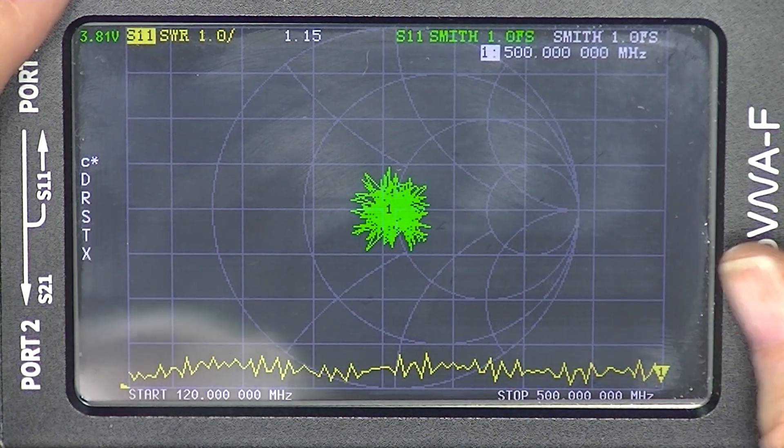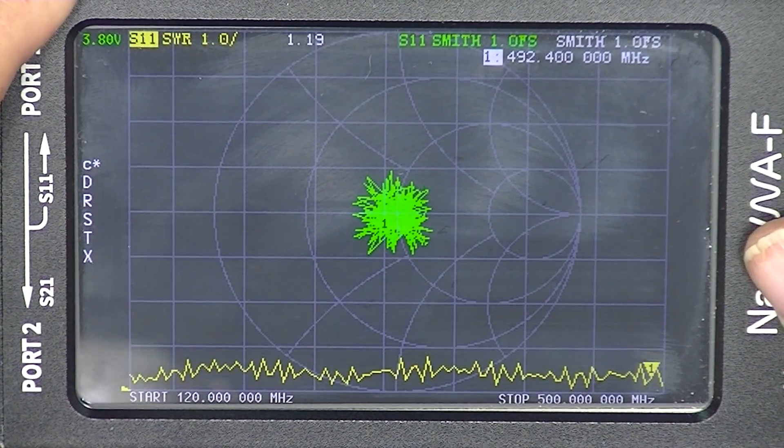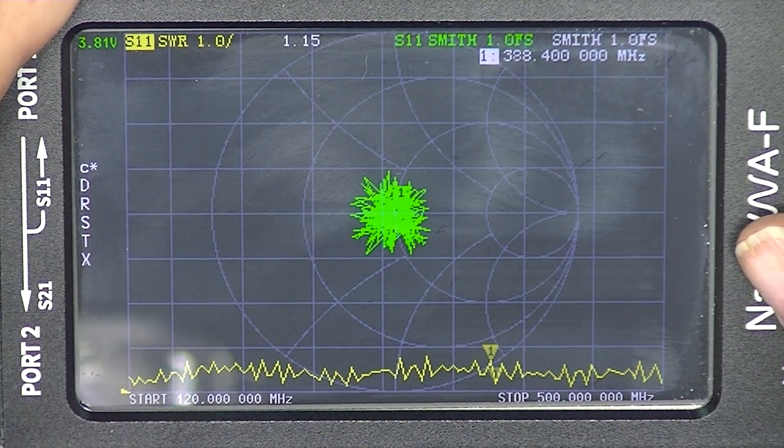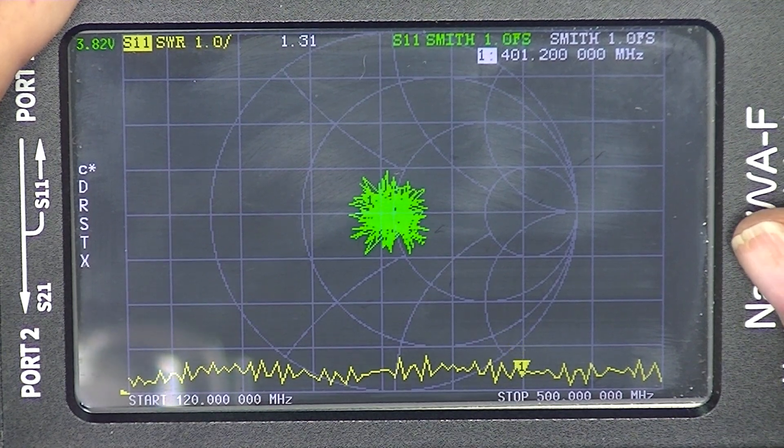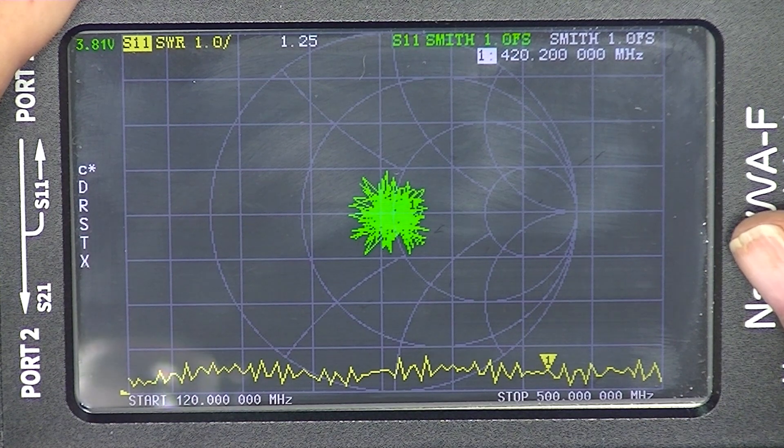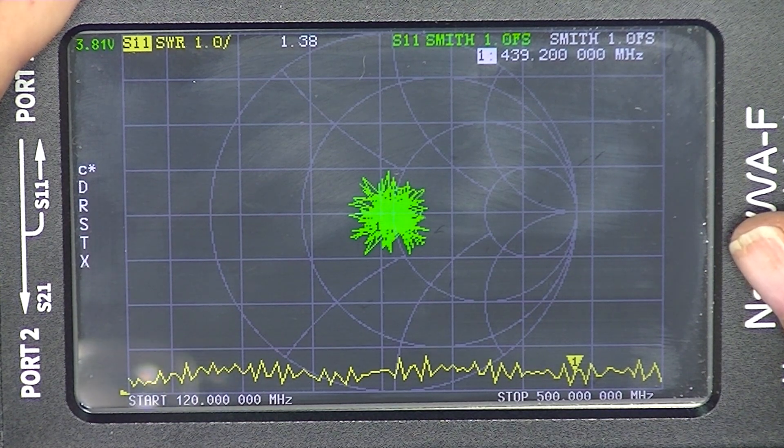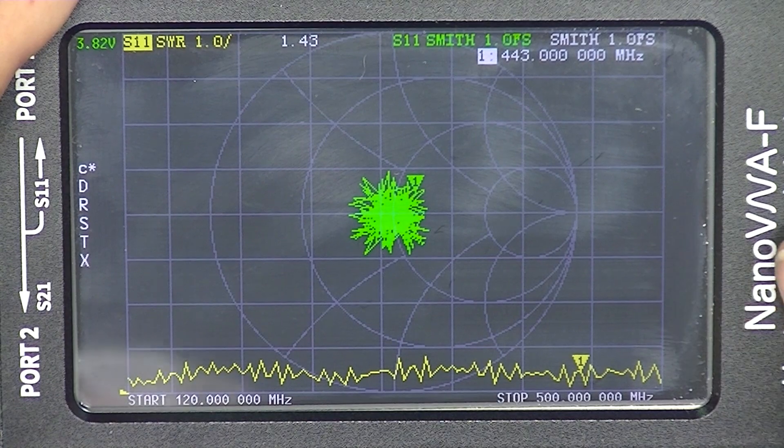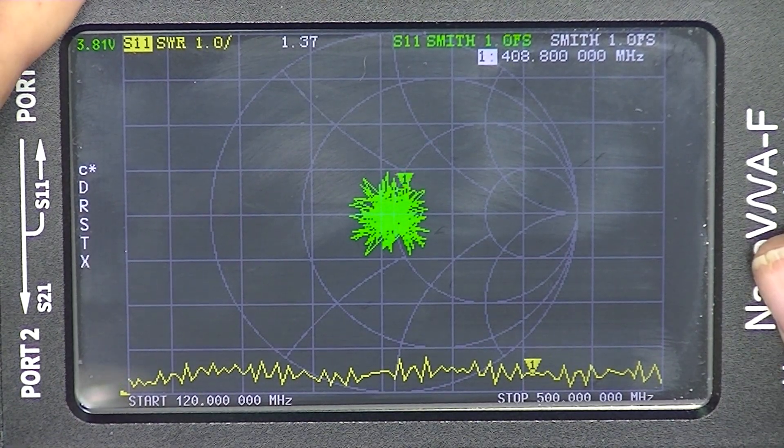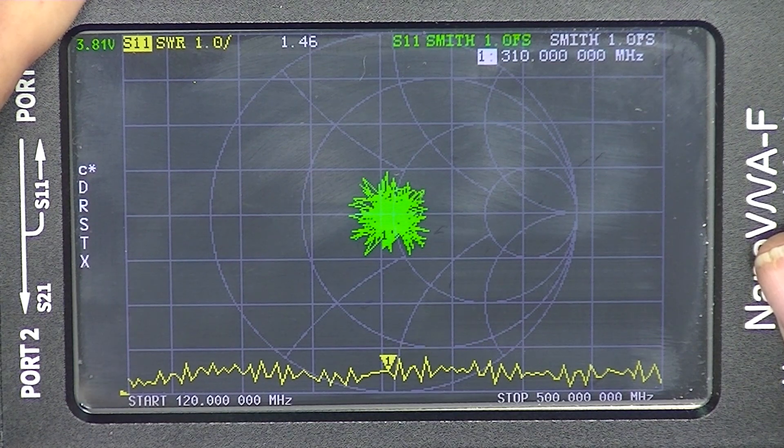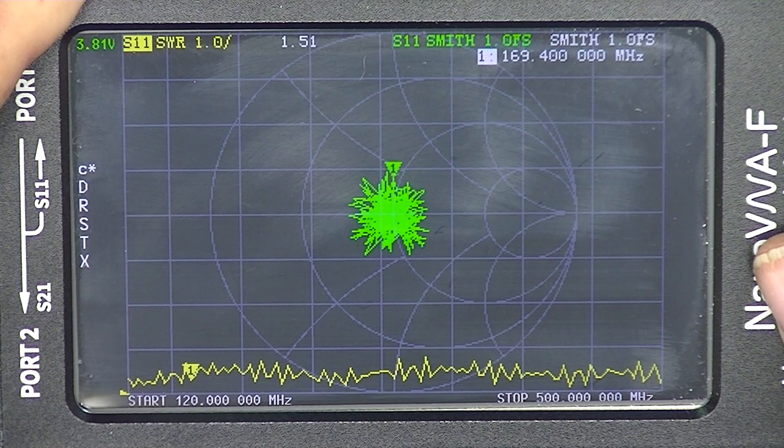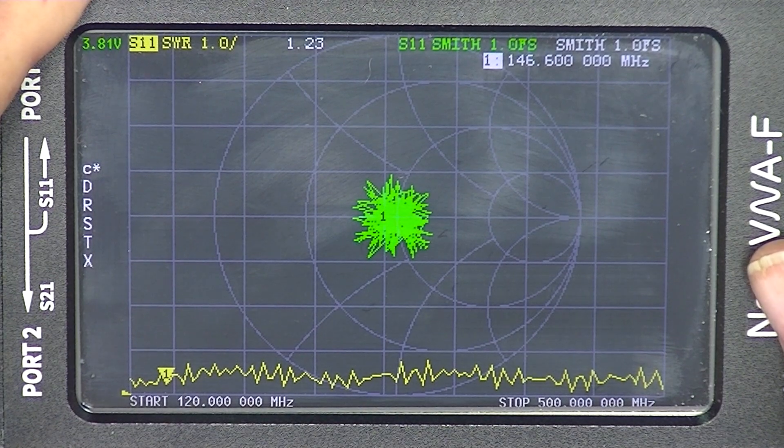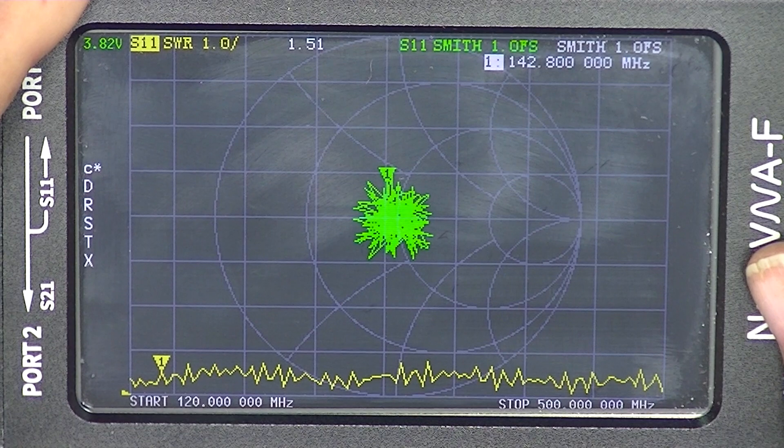Centered around 50 ohms, almost, almost perfectly. That's at 500 megahertz. See how it just bounces around there. I went past 440. So again we're at a little peak in the SWR and we'll go down to 140.